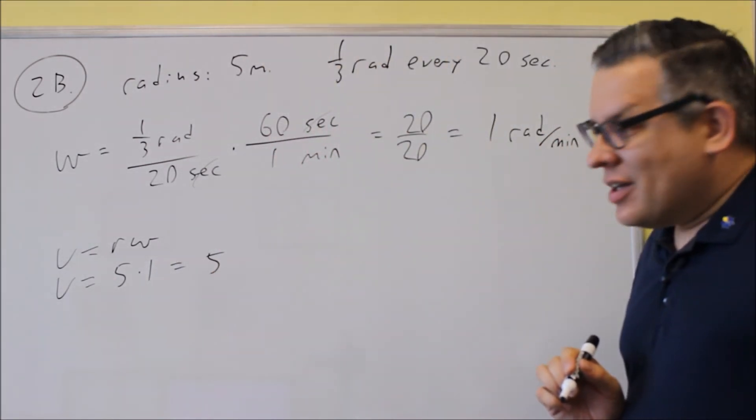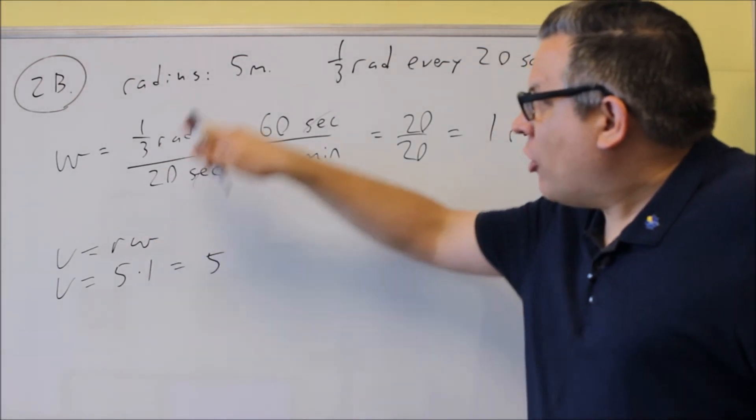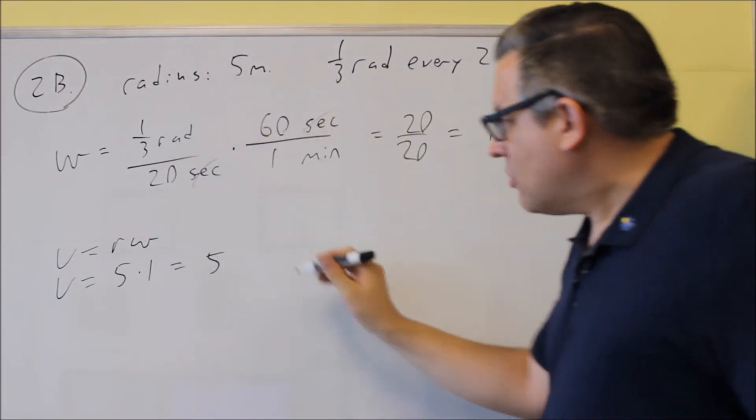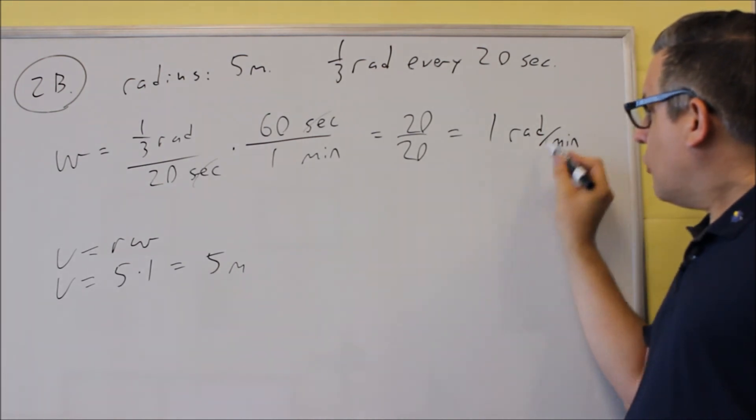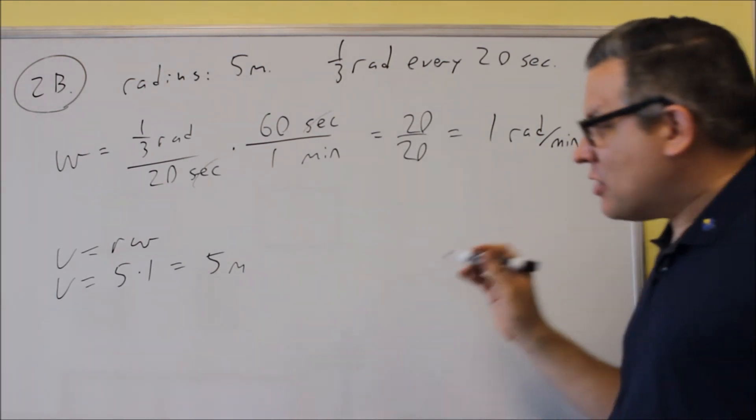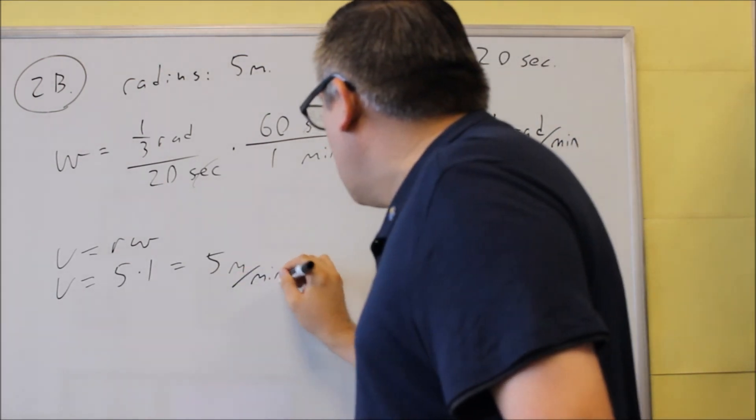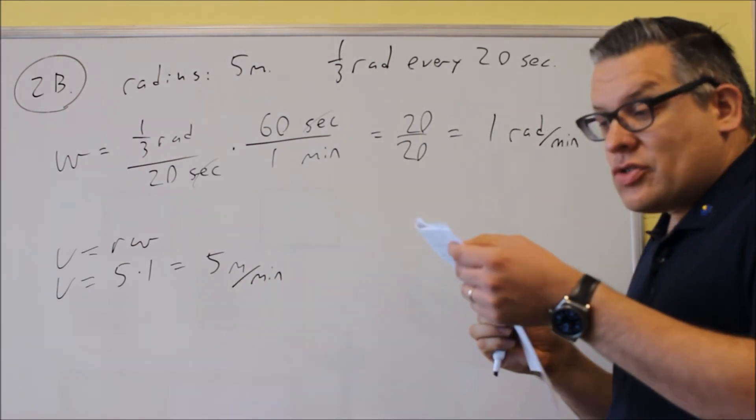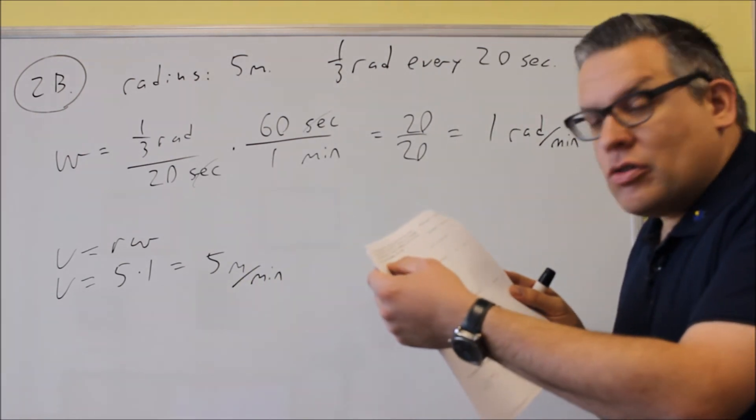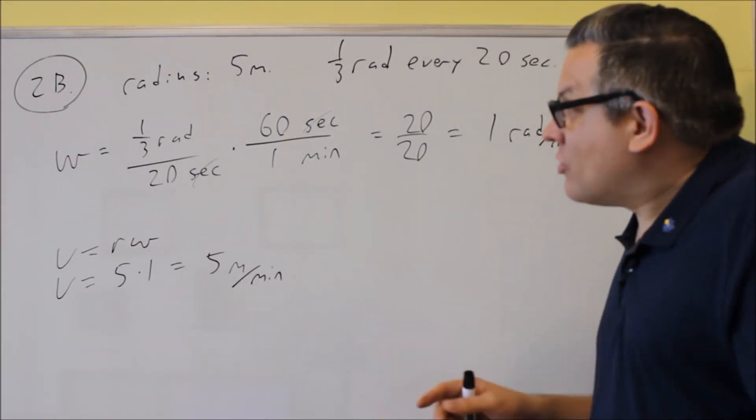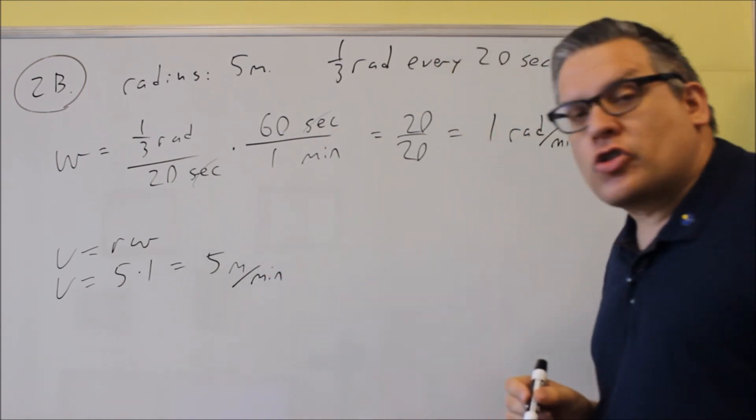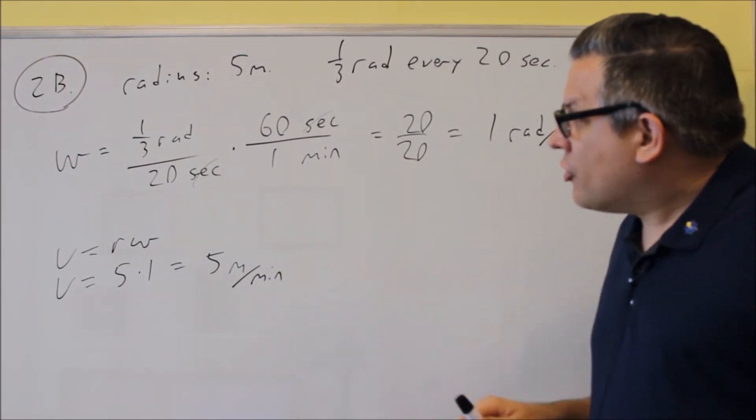Now, the units on that, it's going to be the same unit of measurement from the radius. That's meters. So 5 meters. And then we'll use the same unit of time for this one. That's minutes. So meters per minute. That's the same unit they wanted us to do on the test. The final answer would be 5 meters per minute for linear speed and 1 radian per minute for angular speed.